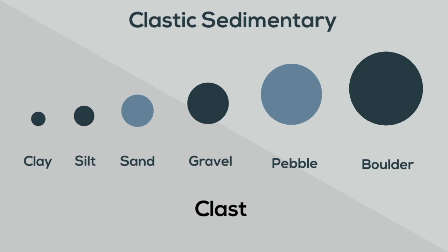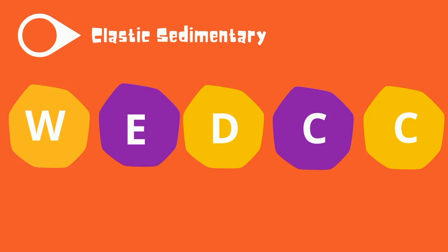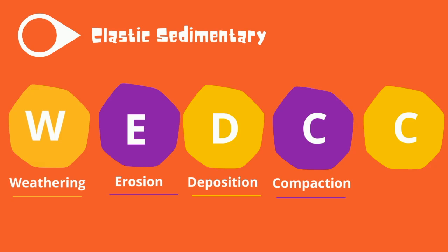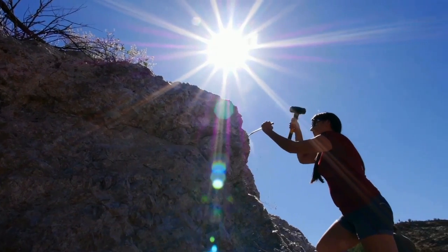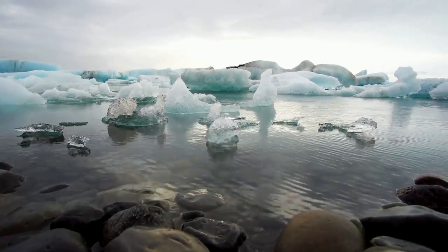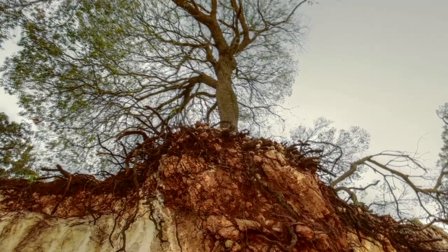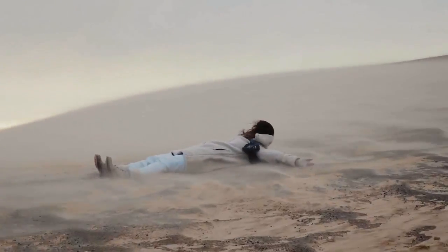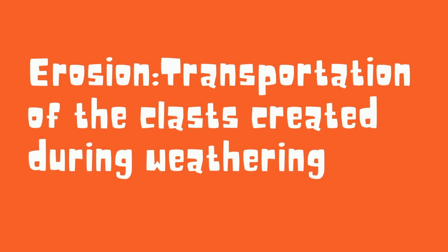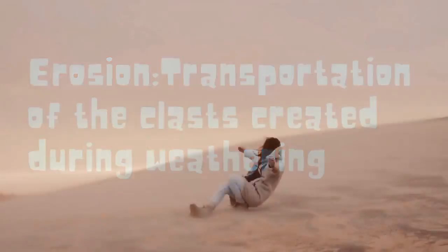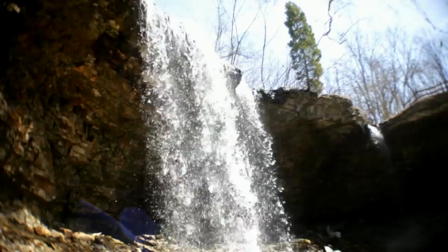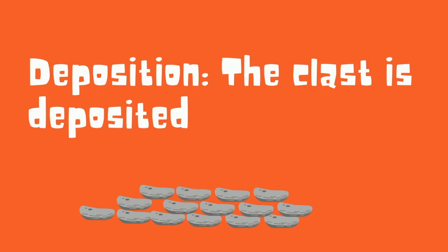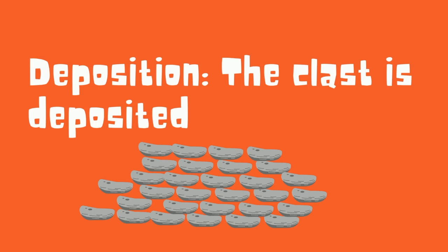These sedimentary rocks follow WEDCC in order to form, which stands for weathering, erosion, deposition, compaction, and cementation. Weathering is when pre-existing rocks are broken down — this may occur by freezing and thawing of water inside the cracks of rocks, trees and other plants growing into cracks, and even blowing winds. Erosion occurs when these clasts or pieces of rocks are transported by either wind, water, or even gravity to a new location. Deposition is when the particles are deposited as loose sediment, usually near a body of water, but not always.